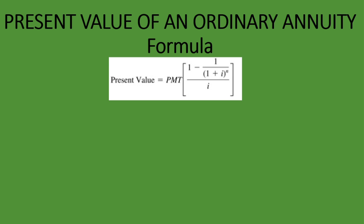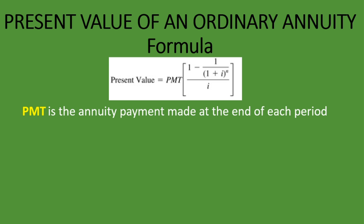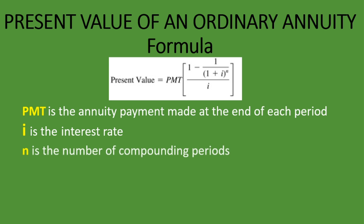What do these letters stand for? PMT is the annuity payment made at the end of each period — whatever payment you're told is made at the end of each period, that is PMT. I is the interest rate, and it can be written as I or R; they both stand for the interest rate. And n is the number of compounding periods.